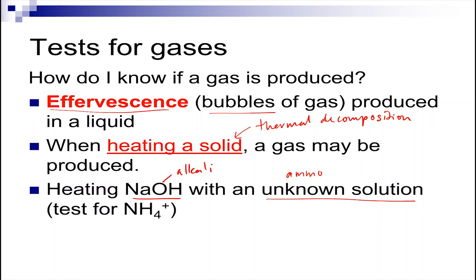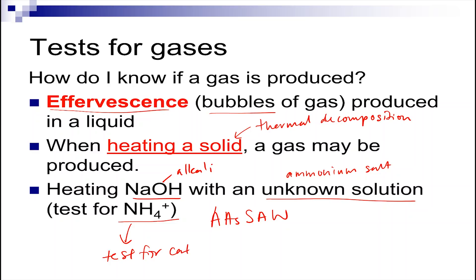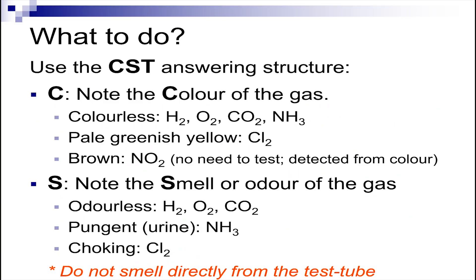Or sometimes when you heat sodium hydroxide, which is an alkali, with an unknown substance — and this unknown substance is usually an ammonium salt. This is basically your AASSW, which will be covered in tests for cation. In this topic, you need to carry out the experiment, write down the observation, and know the chemistry behind it.